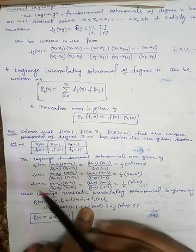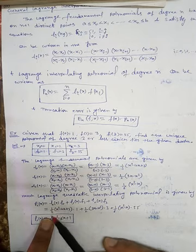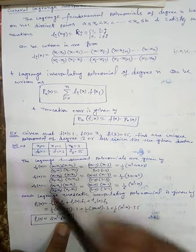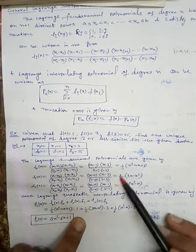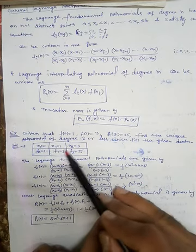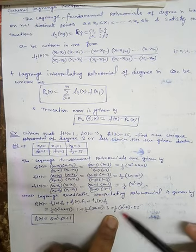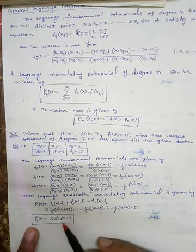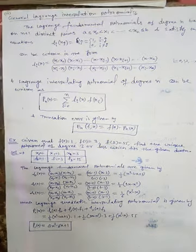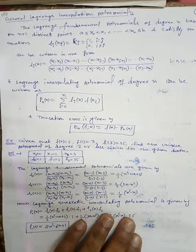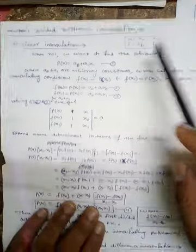Now substitute L0, L1, L2 into the formula: p2(x) = (1/3)(x²-4x+3)*1 + (1/2)(3x-x²)*3 + (1/6)(x²-x)*55. Simplifying, we get p2(x) = 8x² - 6x + 1. This is the polynomial. This completes Lagrange's interpolation method. In the next video we will discuss Newton's divided difference interpolation. Thank you.